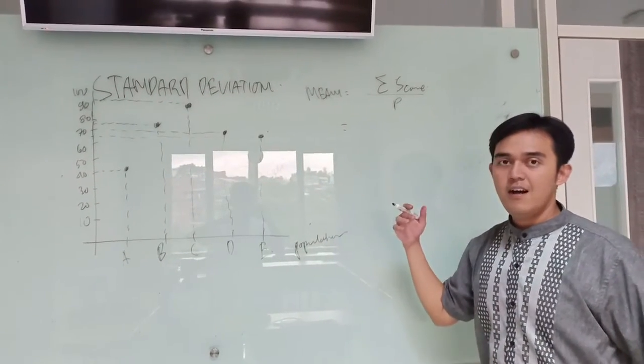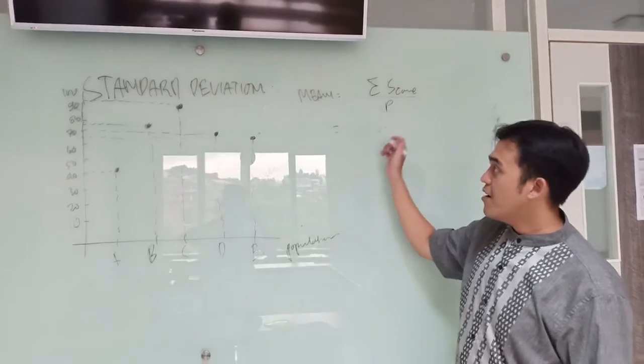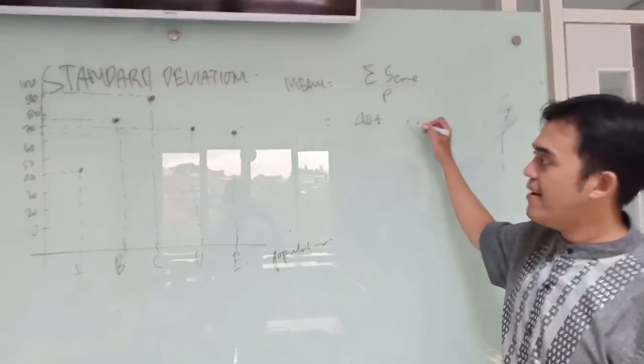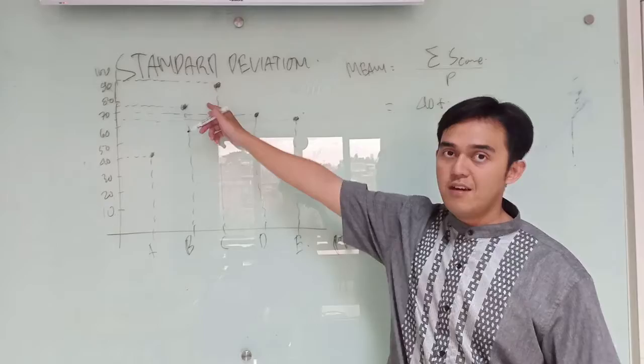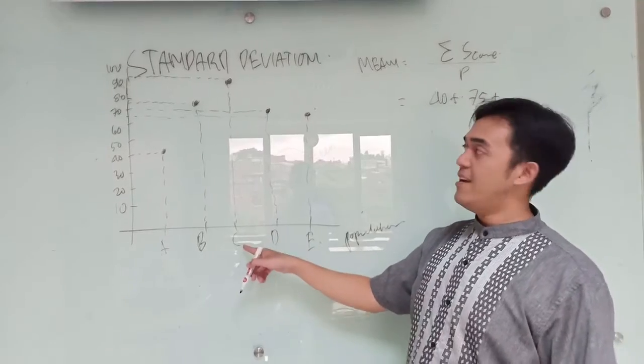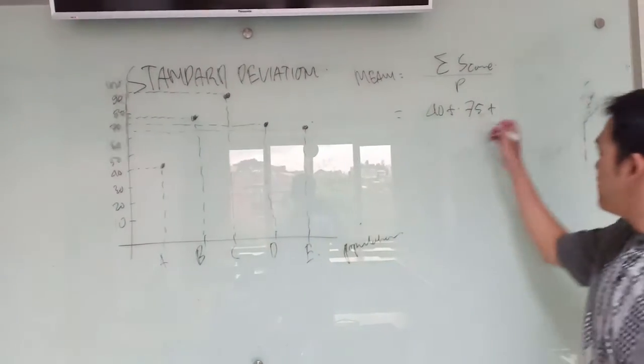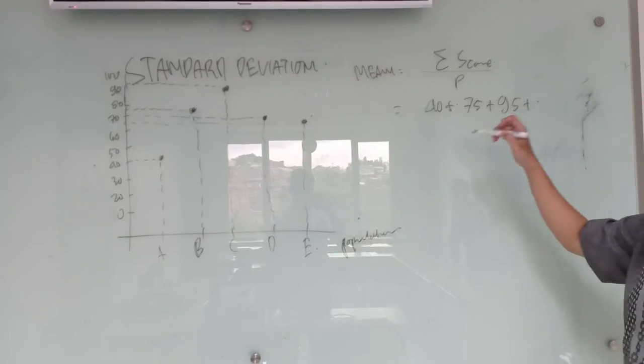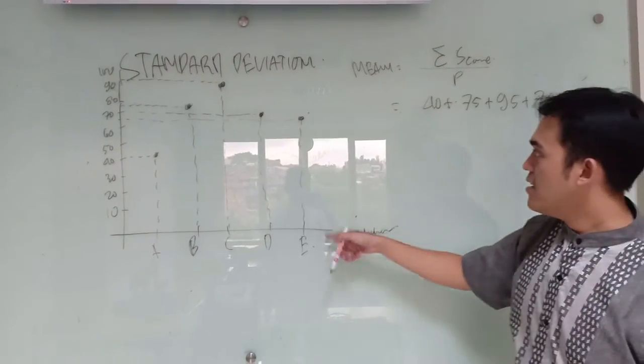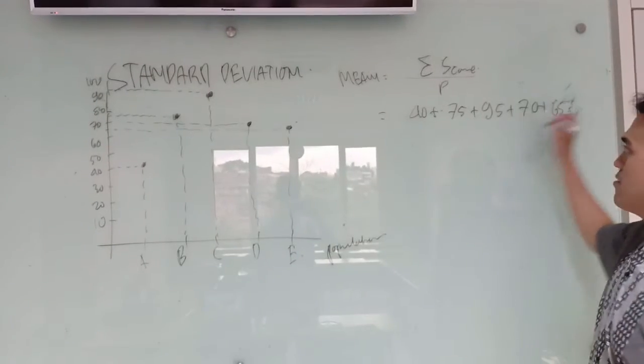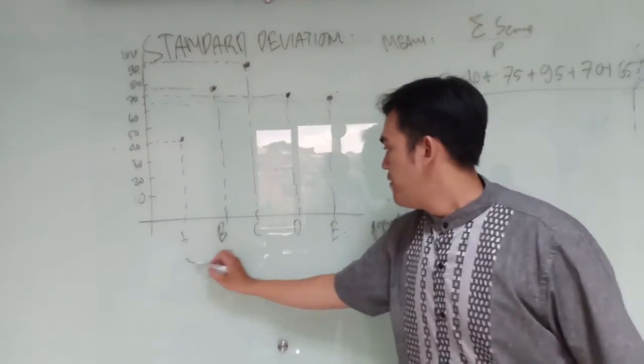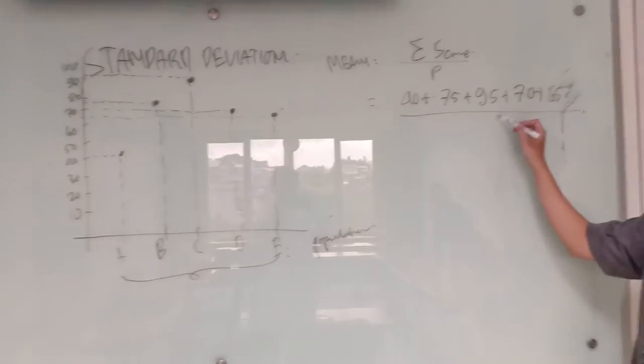We can make a summary that the total of the score, for example, student A, they got 40. We just put 40 plus student B, they got 75. We just put 75 plus the highest one is C. They got 95, 95 plus student D, they got 70, 70 and they got 65, 65. The total of the score, we just divided into the population. We have here 5 of the population, so we just put 5 here.